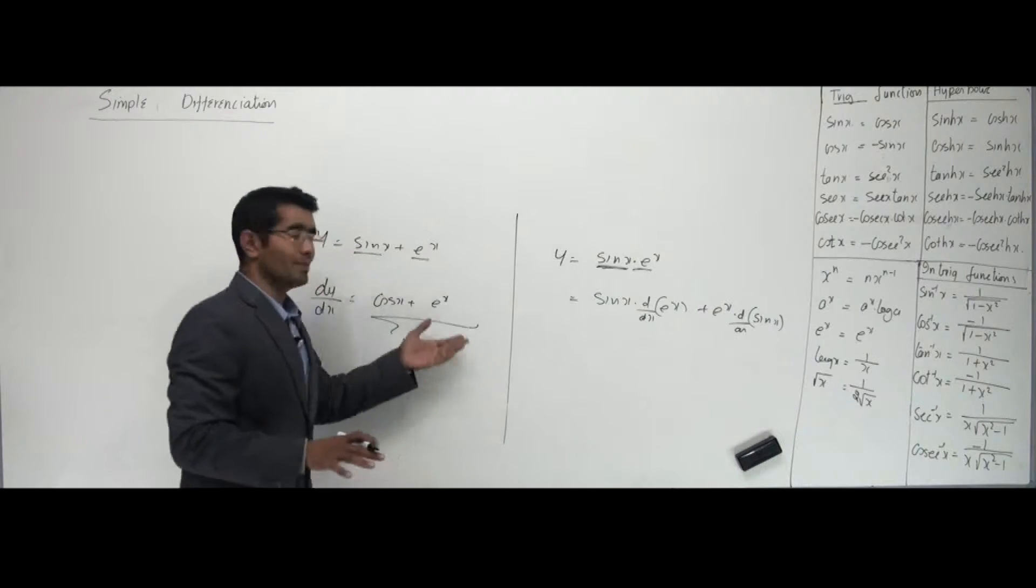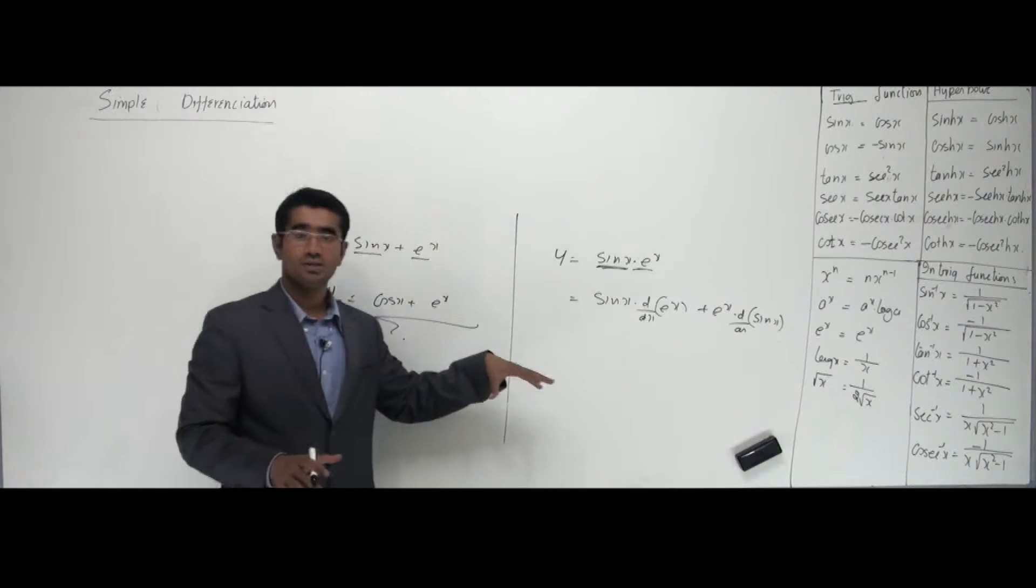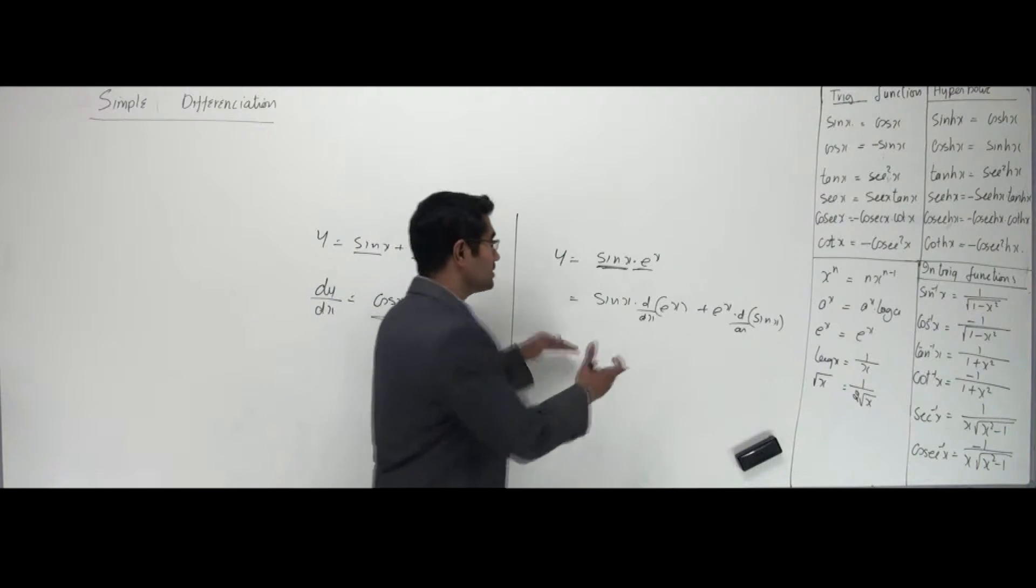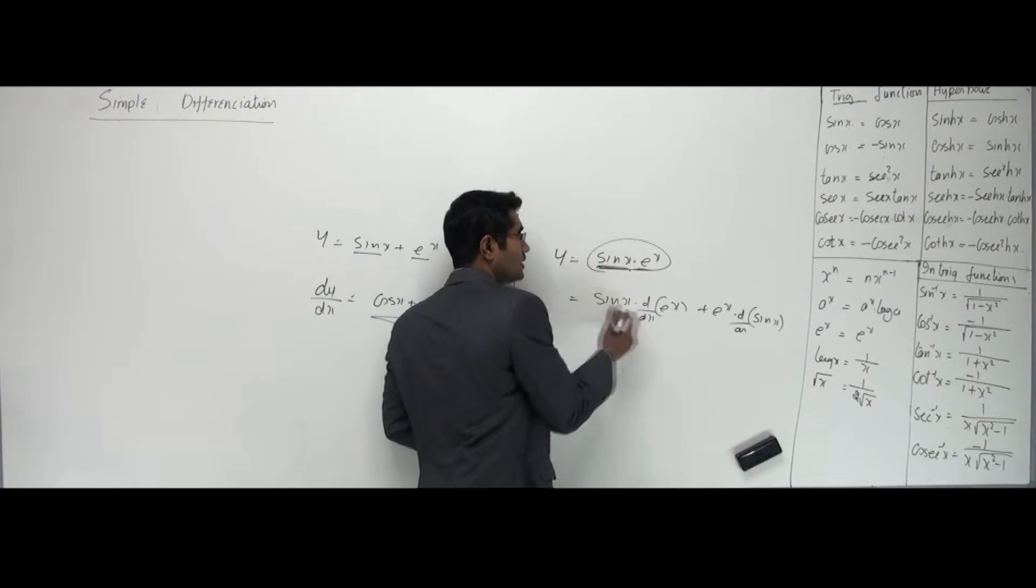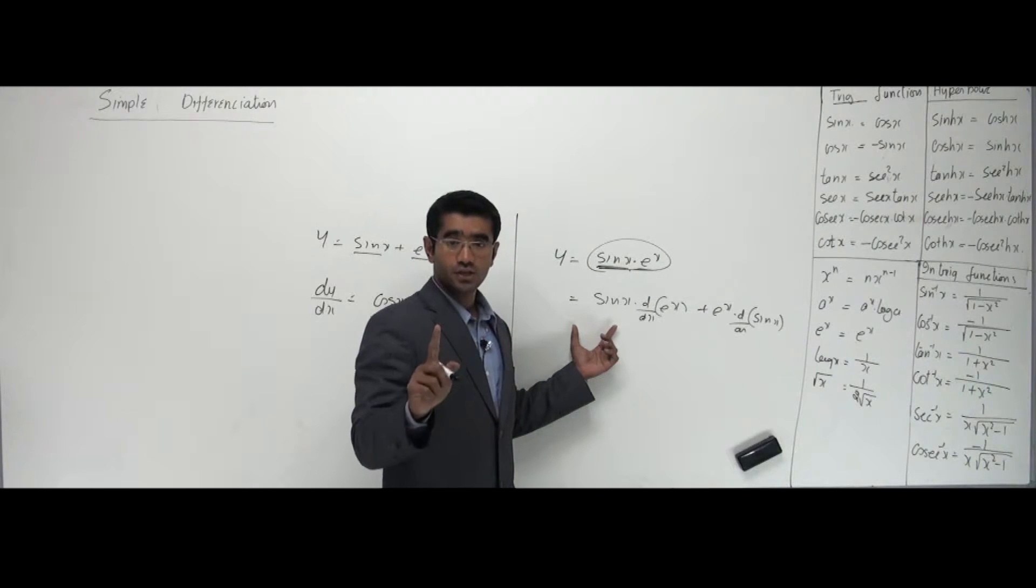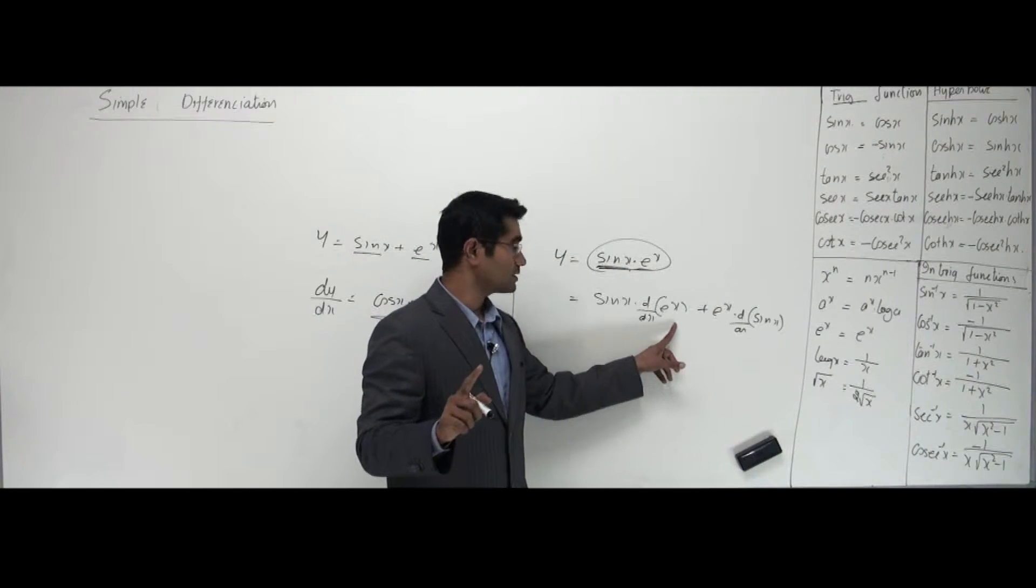Now this is called belting rule or basically in terms of differentiation is called as product rule. We would follow more layman language. What we understand. So they come in a different fashion. What did I do? I separated them. And here also you can see you're differentiating only one function. Who's that? E power x here. And here it is sin x.